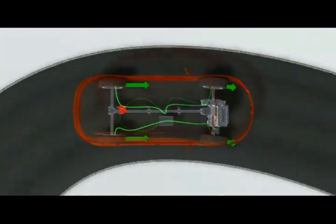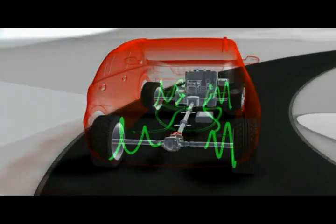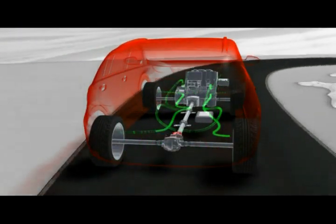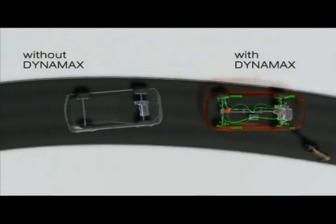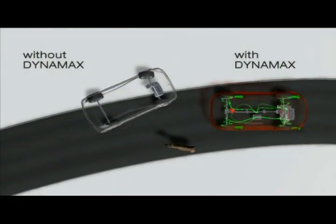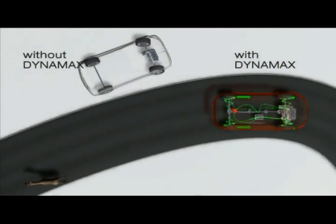In addition, Dynamax prevents unintended over and understeer by reducing unwanted traction forces to the front axle, optimizing control of the vehicle, and improving handling in every situation.